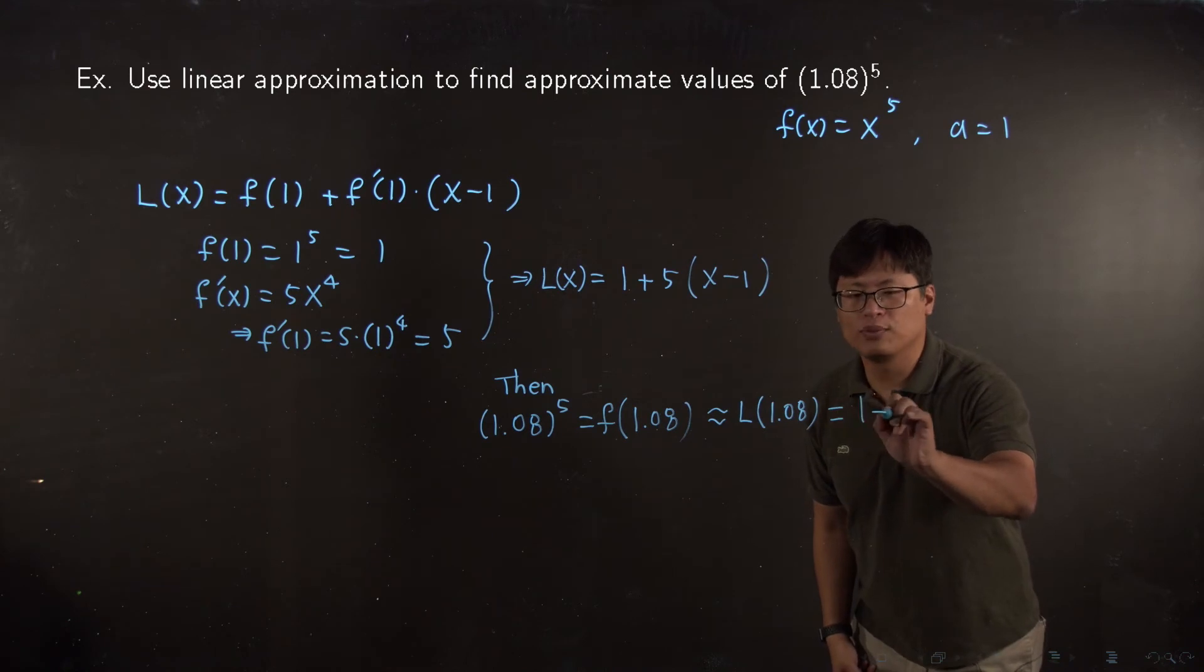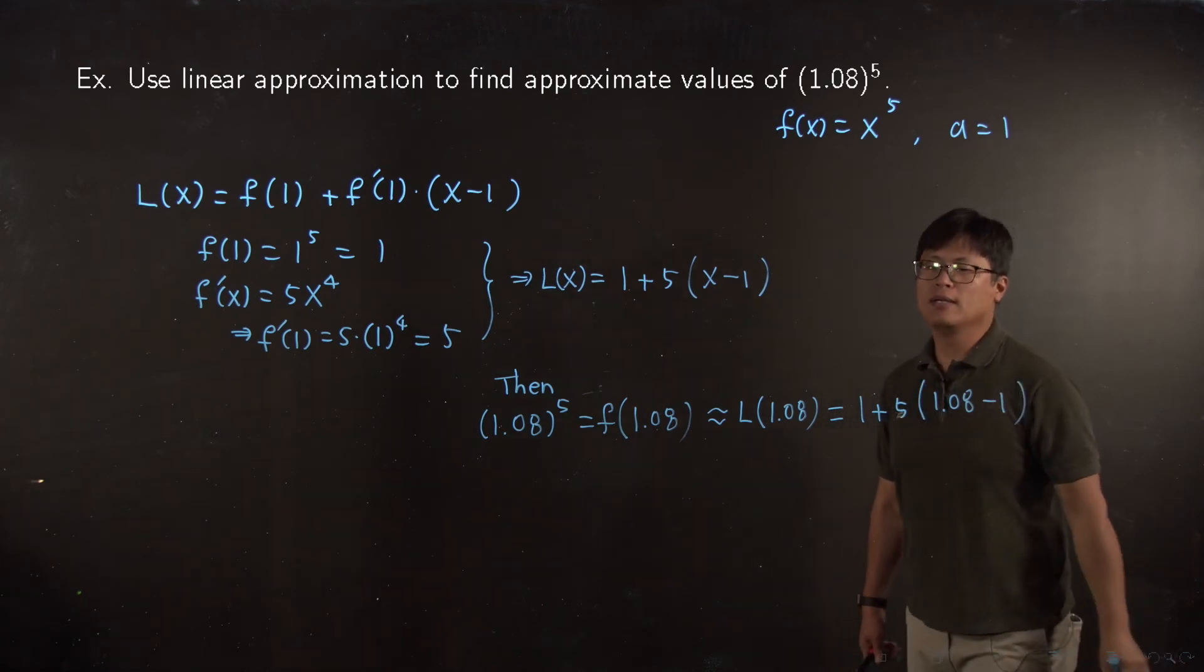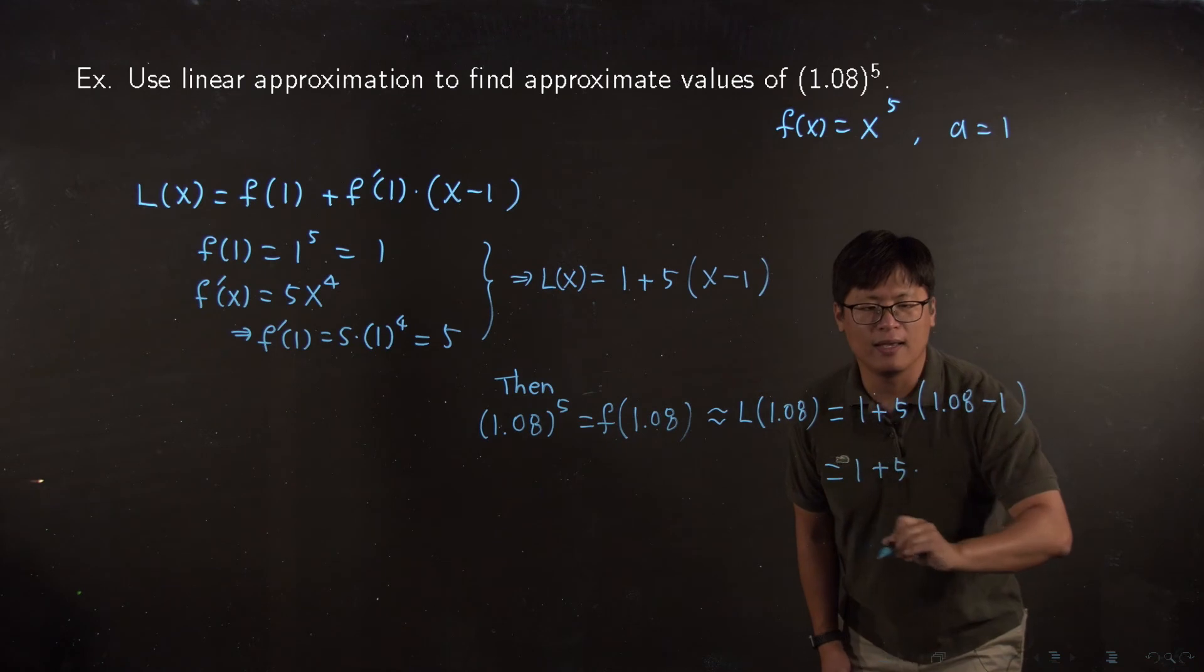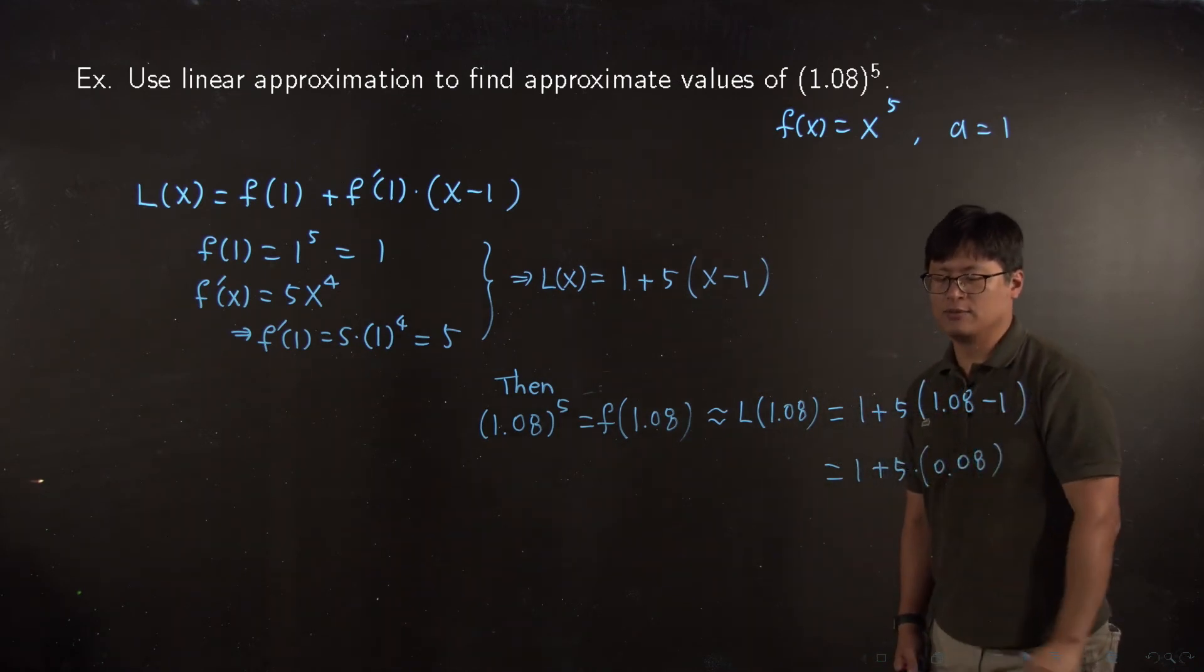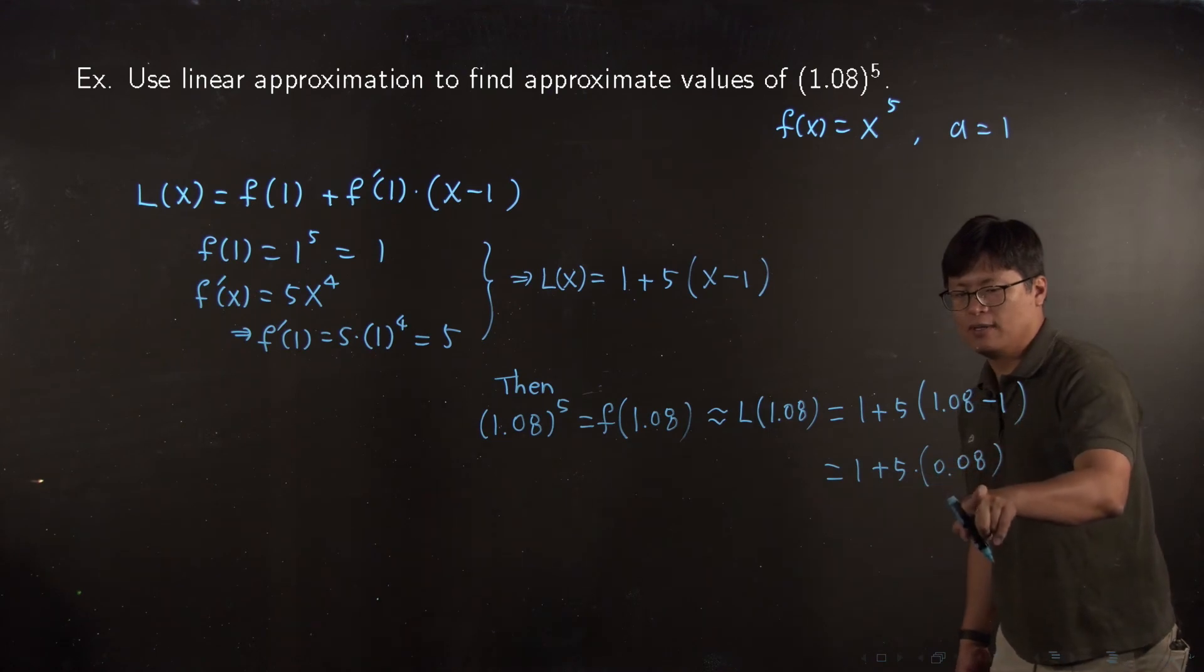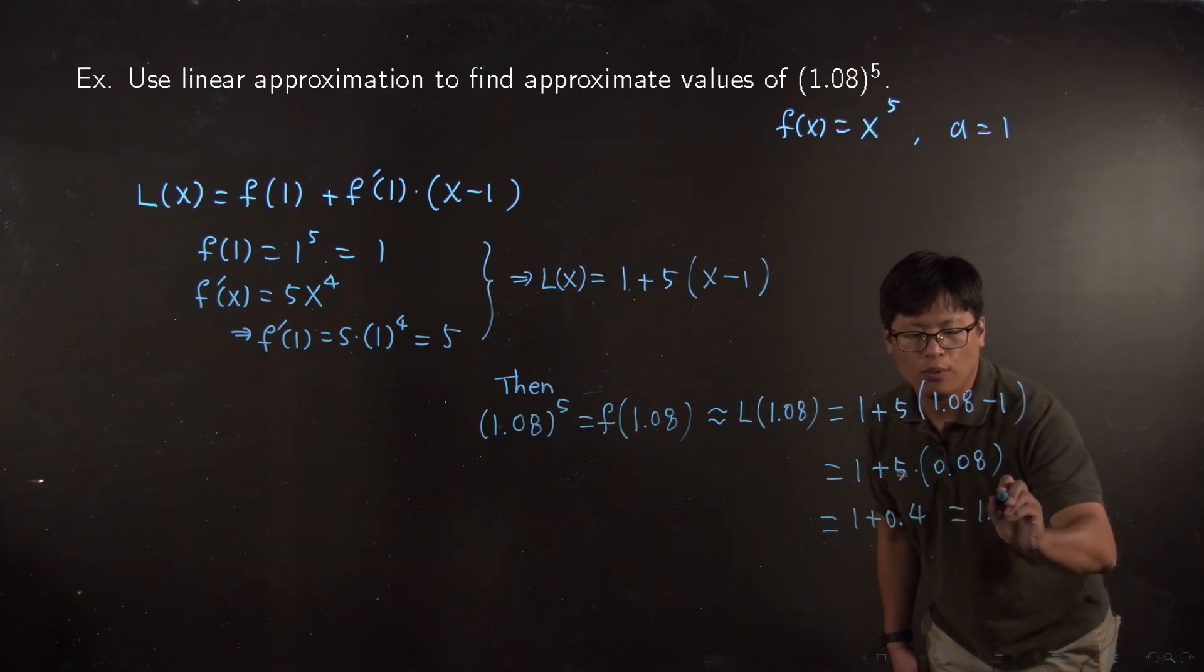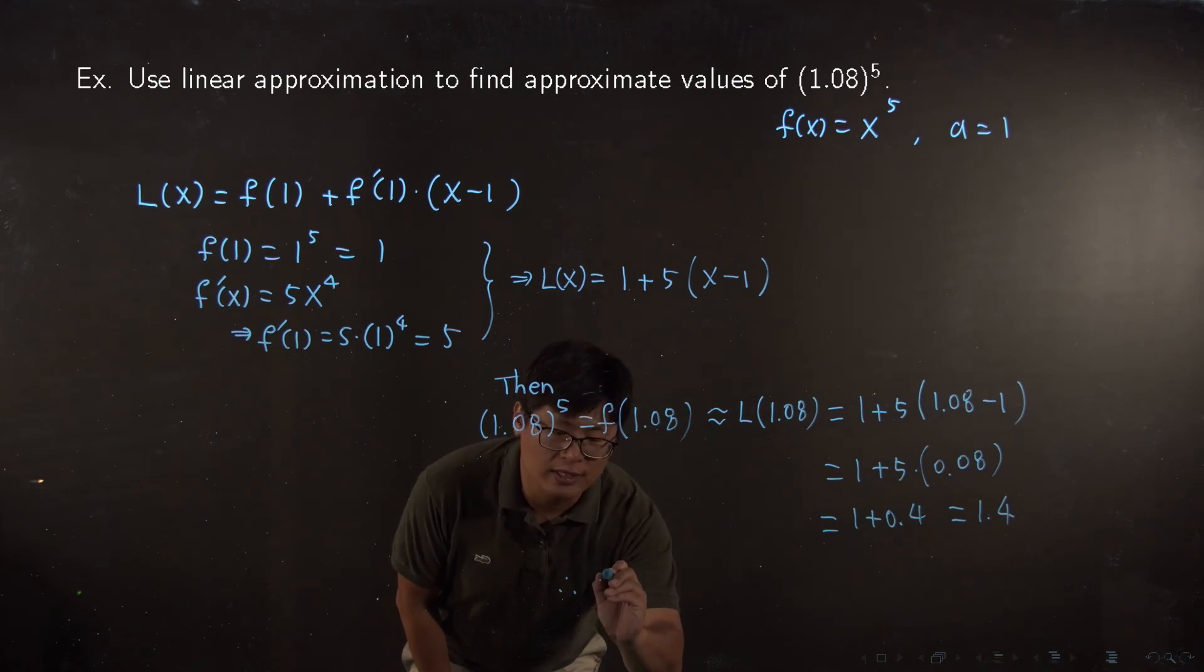That is equal to 1 plus 5 times (1.08 minus 1). That equals 1 plus 5 times 0.08. Does it make sense? Multiply by 5, then it's 0.4. 1 plus 0.4, which is 1.4.